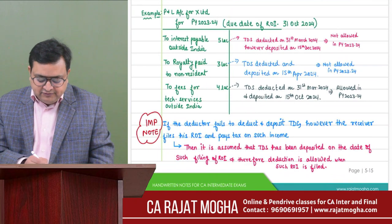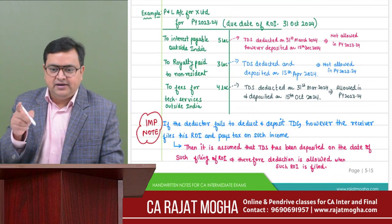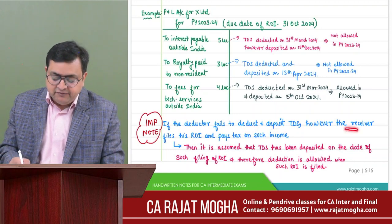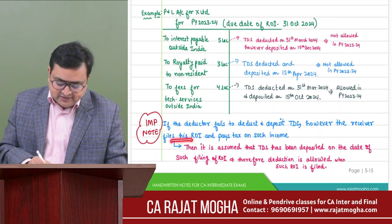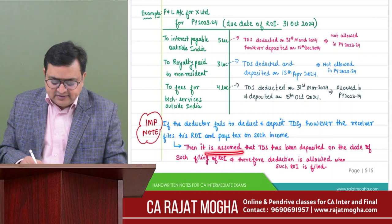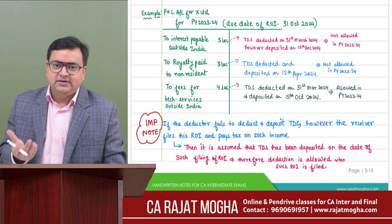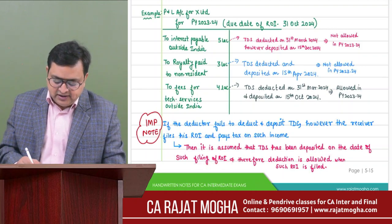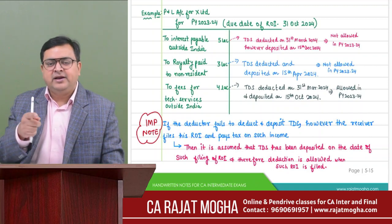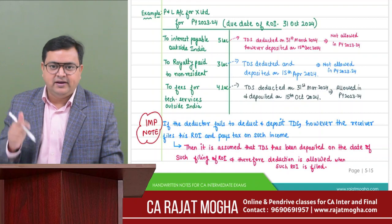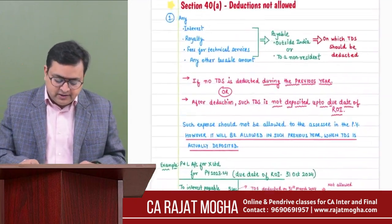To summarize: if the deductor (Ram) fails to deduct or deposit TDS, however the receiver (Paul) files his ROI and pays tax on such income, then it is assumed that TDS has been deposited on the date of filing the return. Therefore, the deduction is allowed for Ram when Paul's ROI is filed. This point can come in MCQs.